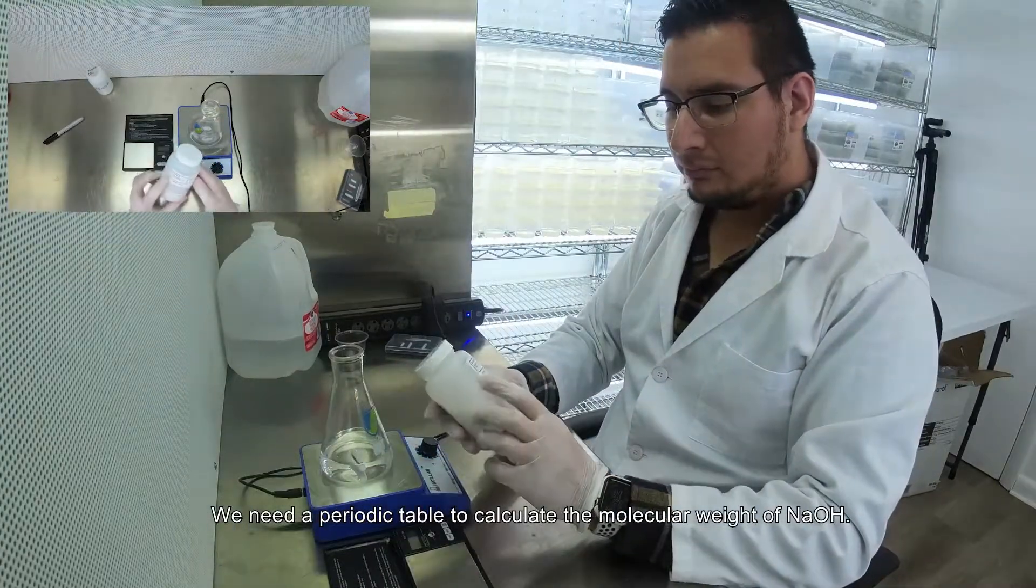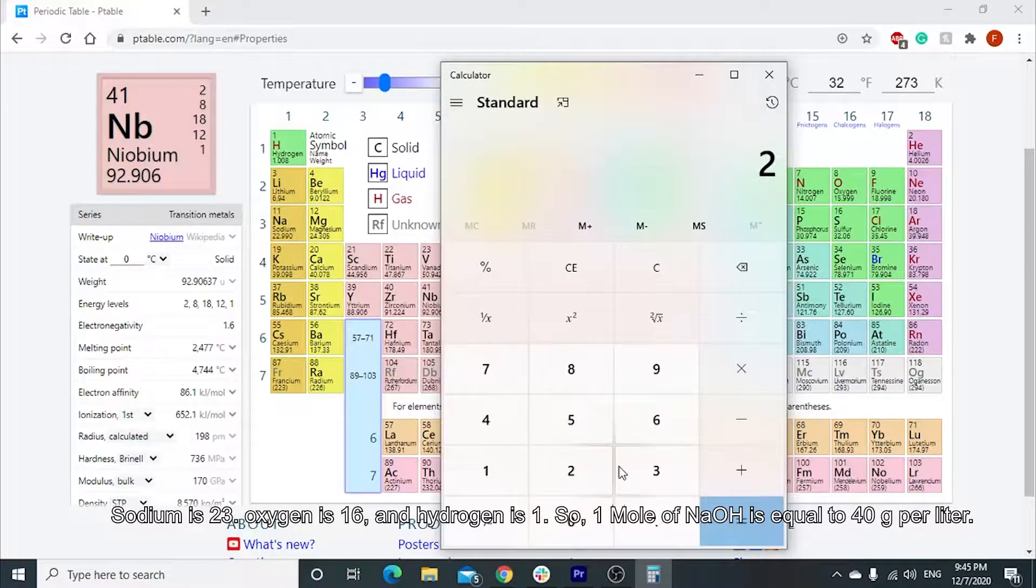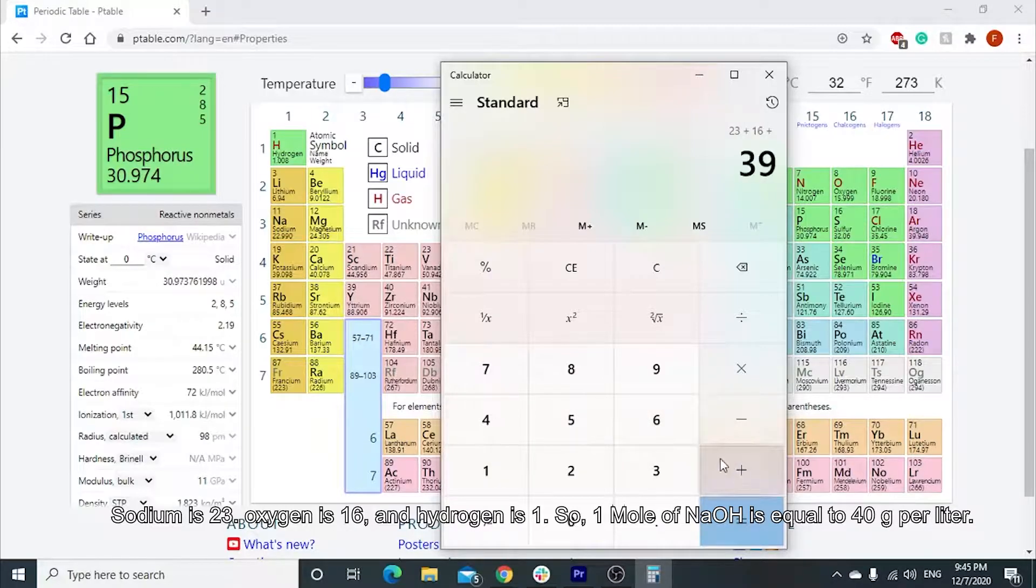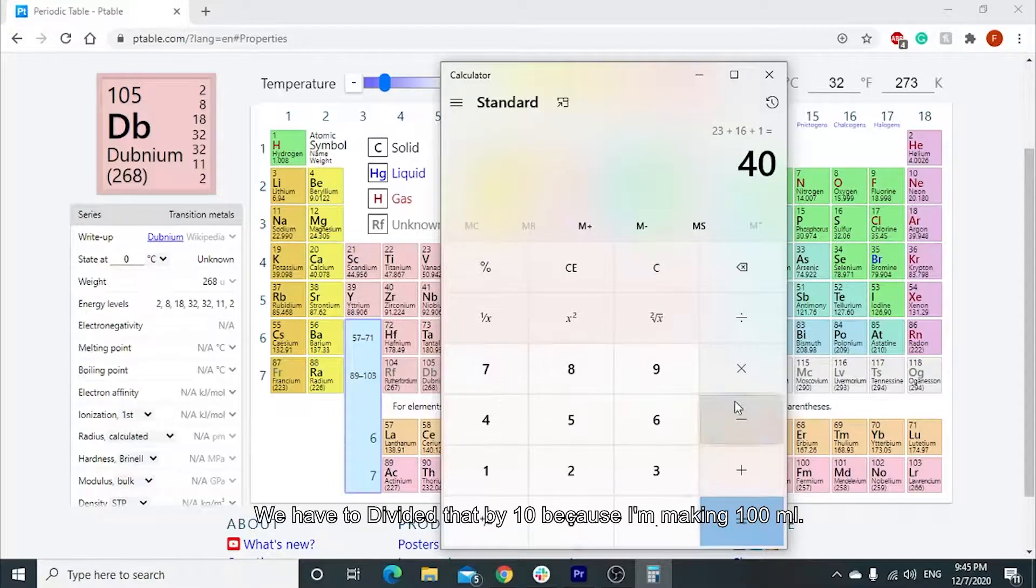We need a periodic table to calculate the molecular weight of sodium hydroxide. Sodium is 23, oxygen is 16, hydrogen is 1. So 1 mol of sodium hydroxide is equal to 40 grams per liter. We have to divide that by 10 because I'm making 100 ml.